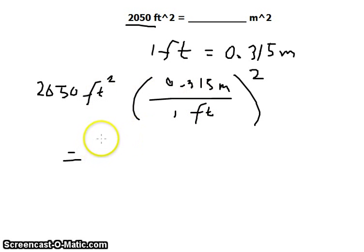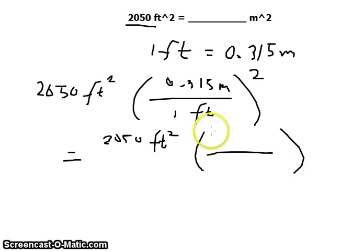And now, we can get an answer like 2,050 square feet, and multiply that. We square the whole thing, that is 0.315 is squared. The unit would also be squared. And also 1 would be squared. That's just 1, and feet would be squared. So we can now cancel the feet,